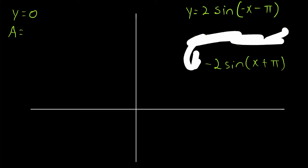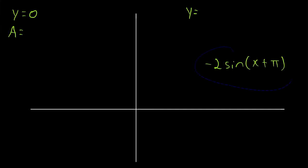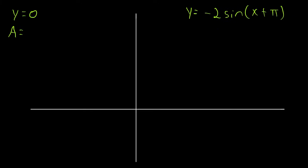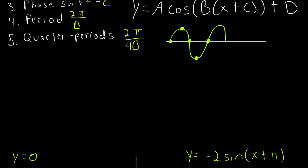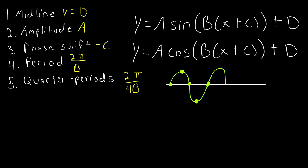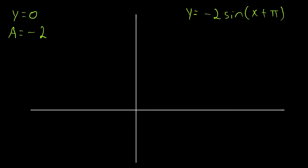Now we have rewritten our function in an equivalent form. We see our amplitude is actually negative two, which is going to affect how we draw the graph. Now that we've got our midline and amplitude, we can start to label the y-axis. We need to mark the points on the y-axis that are two above our midline and two below our midline. Since our midline is y equals zero, those points are simply two and negative two.